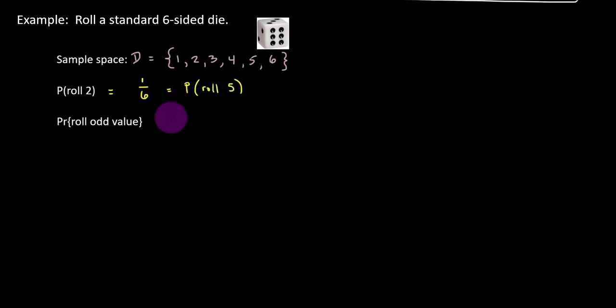What about the probability of rolling an odd value? Well, out of the six outcomes possible, there are three that are odd. So three sixths or one half, if you prefer.